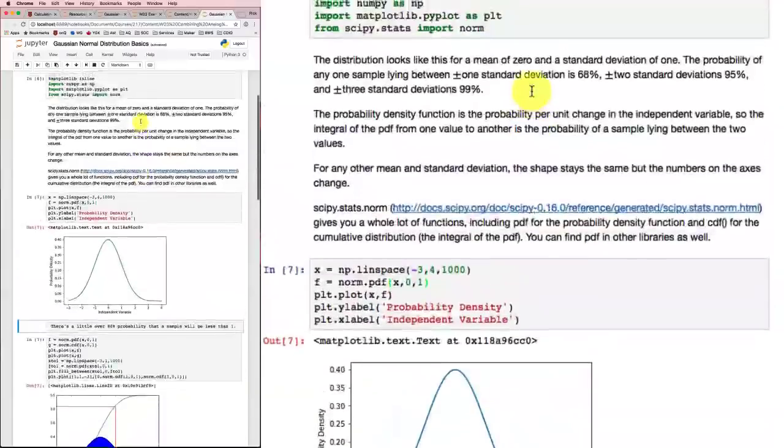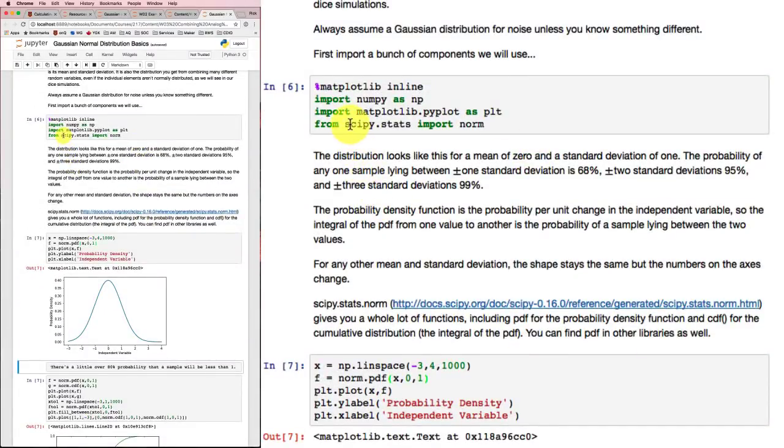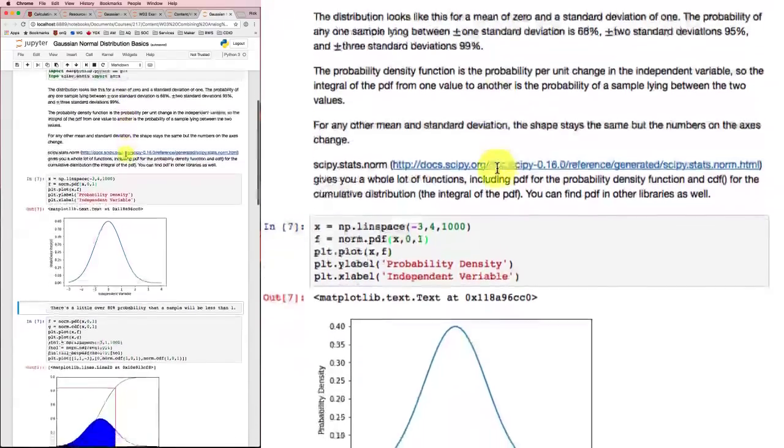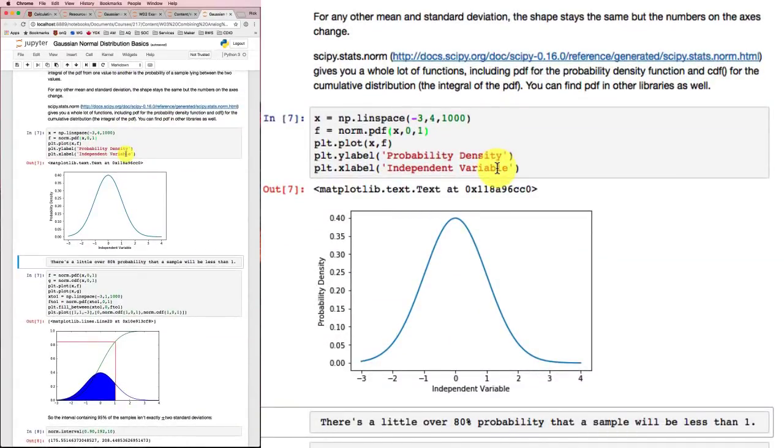Now one of the things that we imported way up here was this SciPy stats library. And we imported just a small chunk of it called norm. Norm is a part of the library that's good for normal distributions. And we've used one of those functions already. Norm.pdf is what got us our PDF.